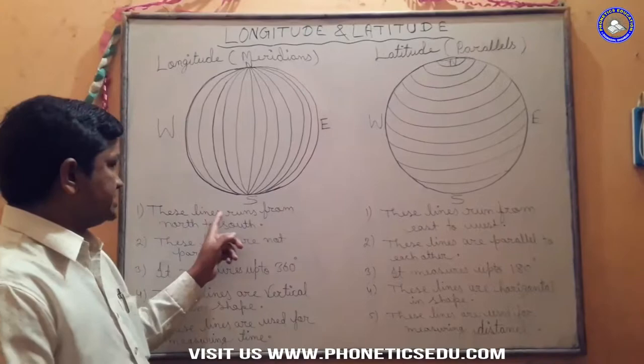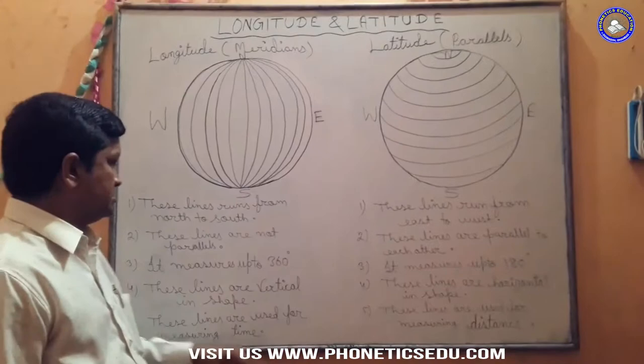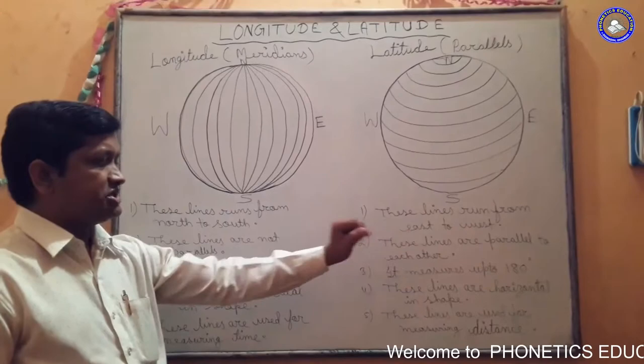We'll discuss the differentiation. These lines run from north to south. These lines run from east to west. These lines are not parallel. These lines are parallel to each other.